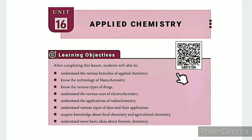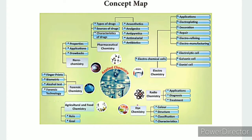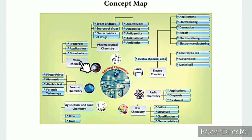There is a QR code link and ICT corner link available in the description box. There is also a concept map in the lesson. In this lesson level, we will learn about 7 fields of applied chemistry, and we will specifically study electrochemistry.